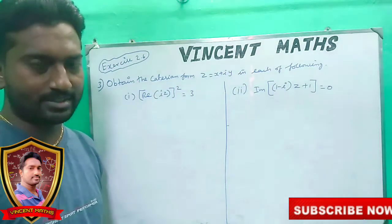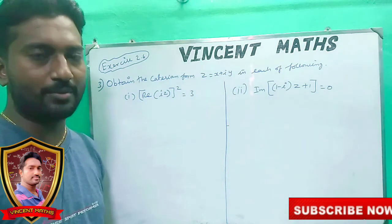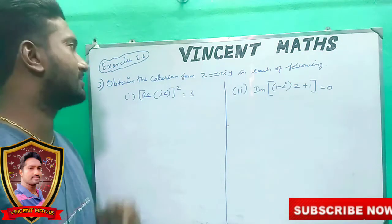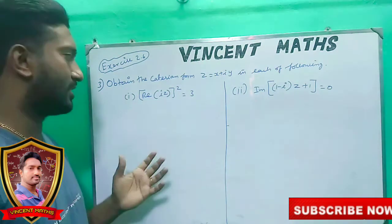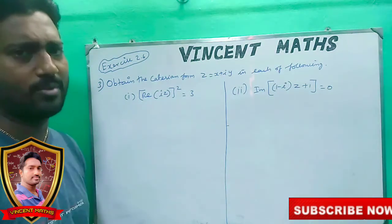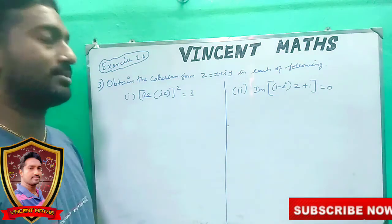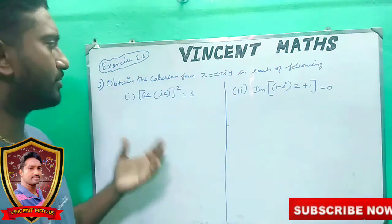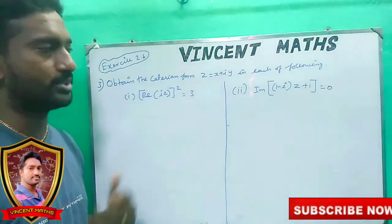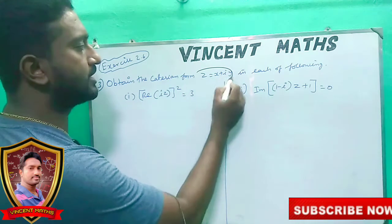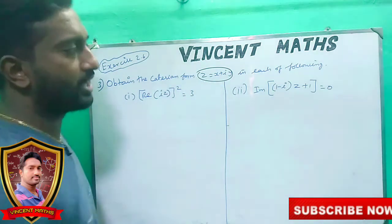Hi friends, this is Vincent. Max is not difficult. If you have X is 2.6, you can find X is 2.6. If you have a complex number form, you can find Z is equal to X plus iY.